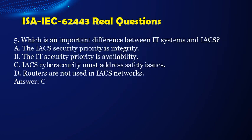Question 5. Which is an important difference between IT systems and IACS? a. The IACS security priority is integrity. b. The IT security priority is availability. c. IACS cybersecurity must address safety issues. d. Routers are not used in IACS networks. Answer: c.